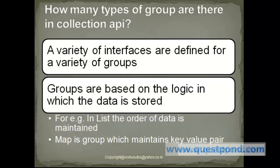The Java Collection API consists of different types of groups. A variety of interfaces are defined within each group. Groups are based upon the logic in which data will be stored.